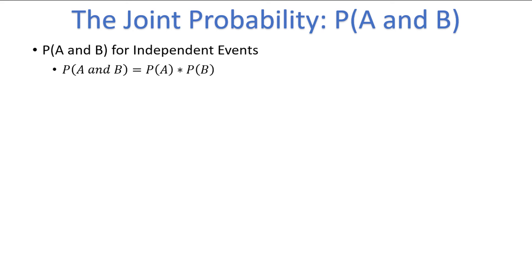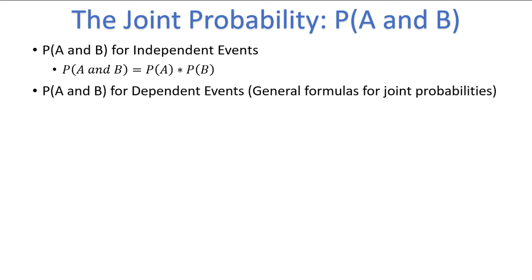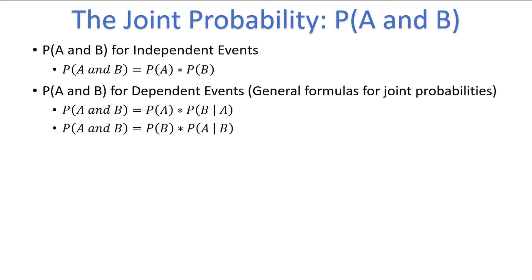If the events A and B are dependent, or if we aren't sure whether or not A and B are independent, we can find the joint probability in one of two ways. Either we can take the probability of A and multiply by the probability of B given A, or we can take the probability of B times the probability of A given B. You should use whichever formula is more convenient. These two formulas always work to find the joint probability, which is why I am calling them the general formulas for joint probabilities. If you aren't sure if your events are independent or dependent, you should use one of these formulas, and not the formula for independent events.